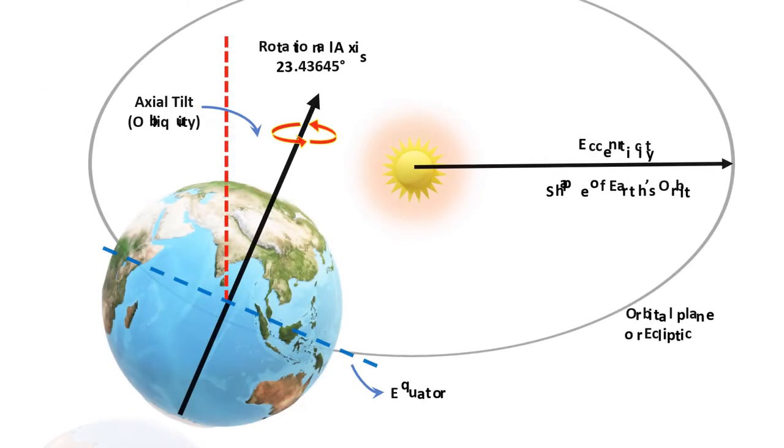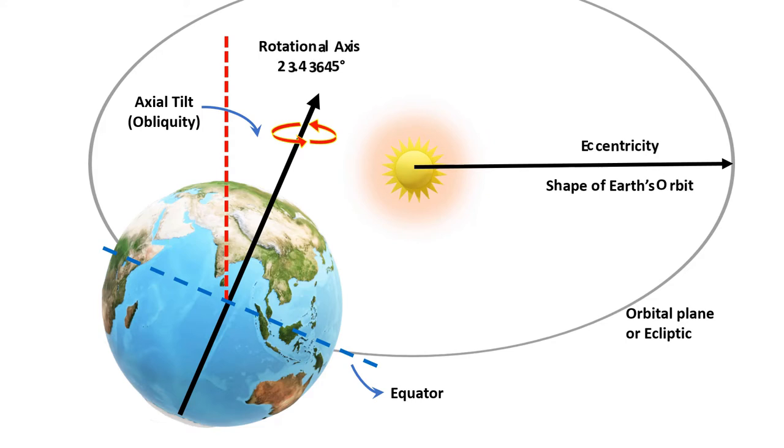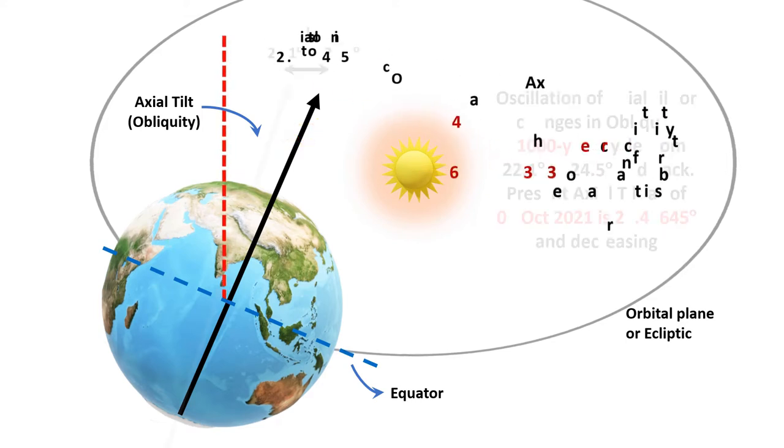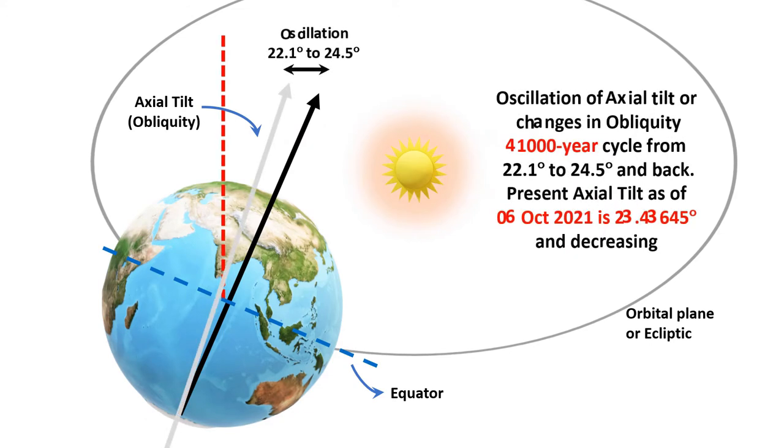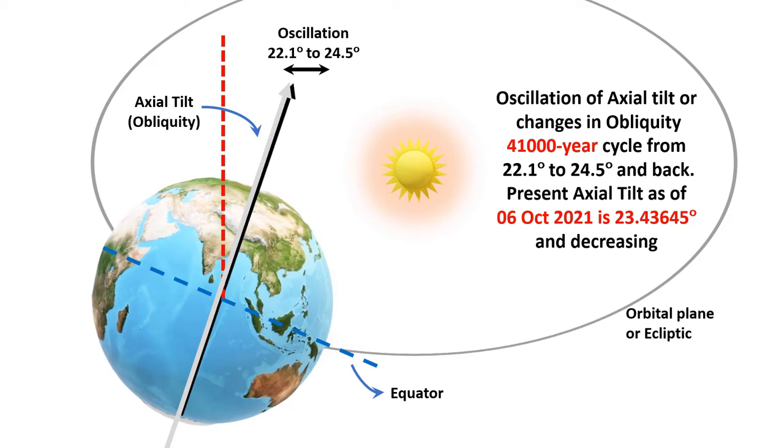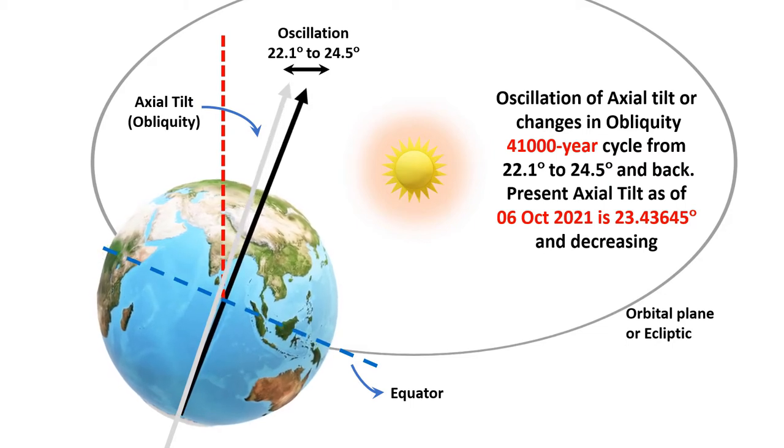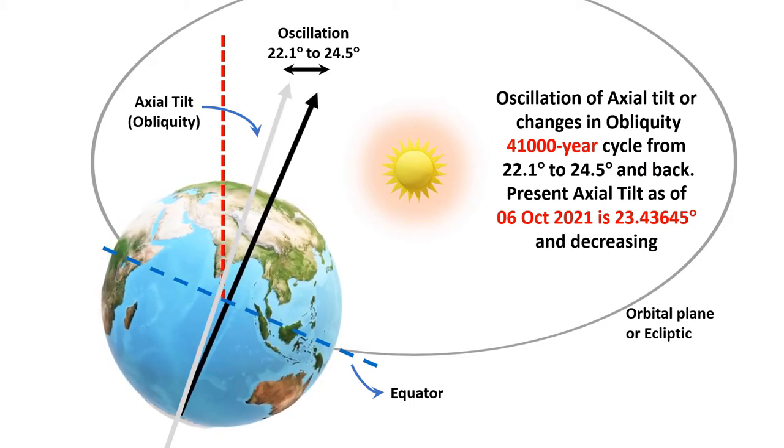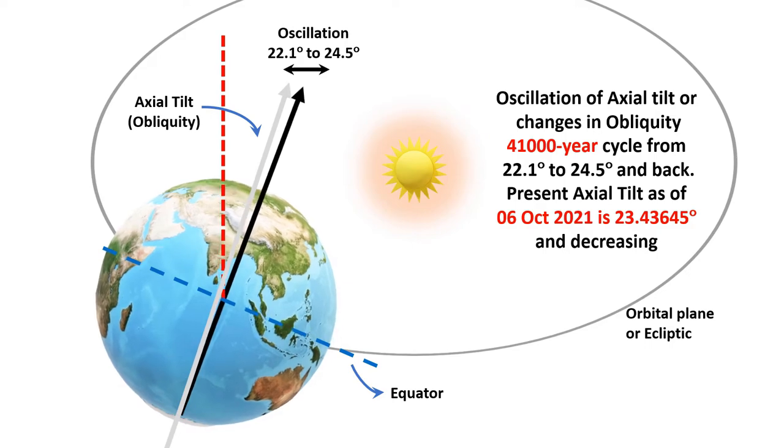We experience these four seasons because the Earth's axis is tilted by about 23.4 degrees with respect to the Earth's orbital plane around the sun. The axial tilt, which is also known as Obliquity, oscillates between 22.1 and 24.5 degrees on a 41,000-year cycle and this tilt is currently decreasing.